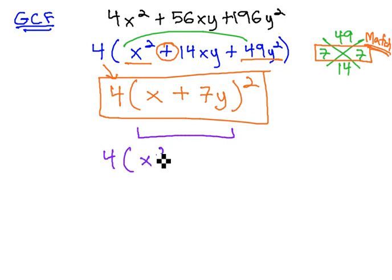Squaring it, we square the first term, x squared, plus the product twice, 7 times x times y is 7xy, and another 7xy is 14xy, plus 7y squared is 49y squared.